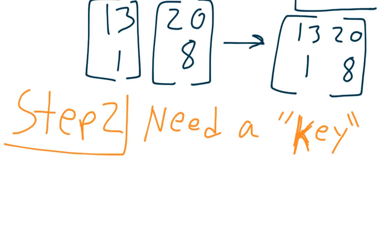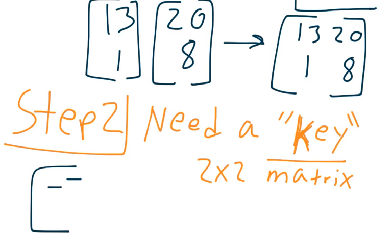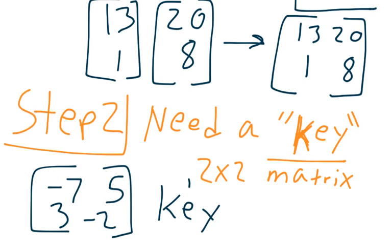Step two, we need a key. What's a key? In this case, a key is a 2 by 2 matrix that I make up. Okay, here's my key for this problem. It's going to be the matrix negative 7, 5, 3, negative 2. This will be my key today. Why did I choose that? Well, look at it. The determinant is going to be negative 1. I made it kind of easy. That's why. So this is my key. It's going to lock the message.